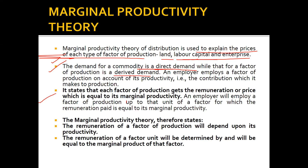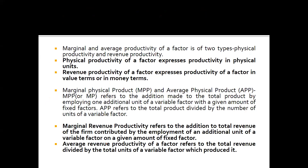An employer employs a factor of production on account of its productivity — the contribution it makes to production. The marginal productivity theory states that each factor of production gets a remuneration equal to its marginal productivity. An employer will employ a factor up to the unit at which remuneration paid equals its marginal productivity. The remuneration of a factor unit will be determined by and equal to its marginal productivity.